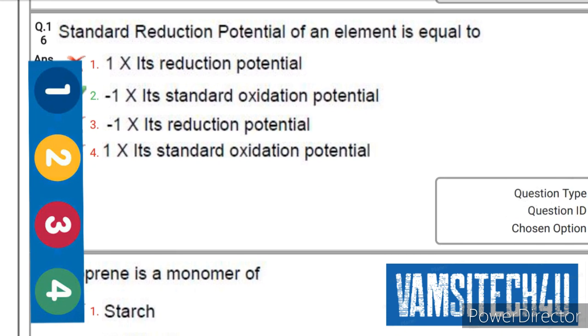Next question: Standard reduction potential of an element is equal to... the right option is second one, that is minus one into its standard oxidation potential.